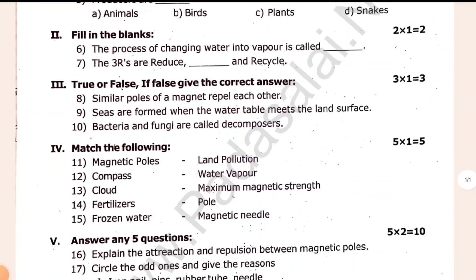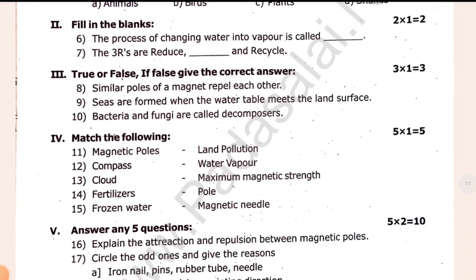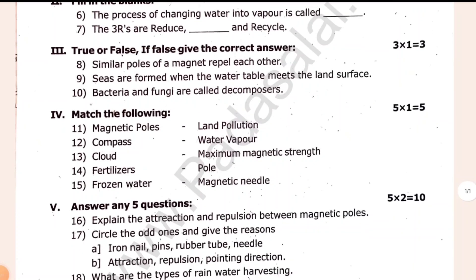Three are reduce, dash, and recycle. Similar poles of a magnet repel each other. Seas are formed when the water table meets the land surface. Bacteria and fungi are called decomposers.